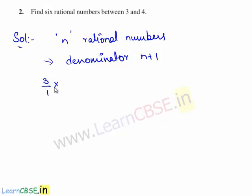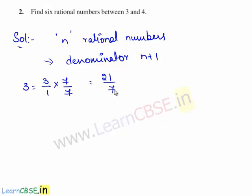This gives 3 times 7 is 21, by 1 times 7 is 7. Hence 3 is expressed as 21/7, where 7 is the denominator.